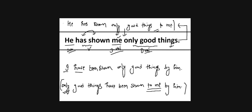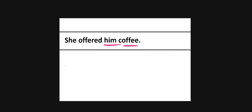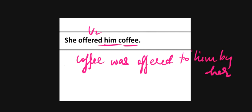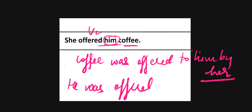Next example: 'She offered him coffee.' Here 'him' and 'coffee' are the two objects. Using 'coffee' as subject: 'Coffee was offered to him by her.' Alternatively, using 'him' as subject: 'He was offered coffee by her.' Both passive forms are acceptable.